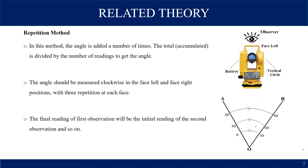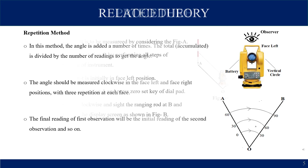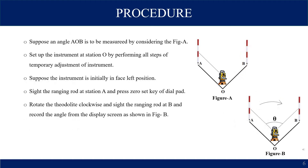The final value of the first observation will be the initial reading of the second observation. The readings will continue from 0 to 30 degrees as your first rotation, then from 30 degrees to 60 degrees, then 60 degrees to 90 degrees. For example, you have to measure the angle A→O→B using the repetition method.